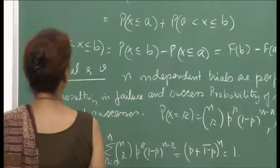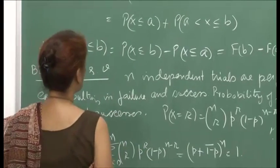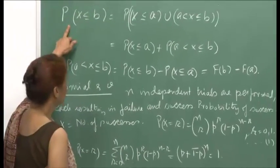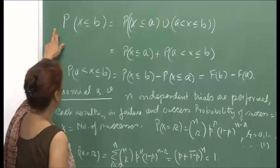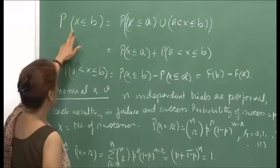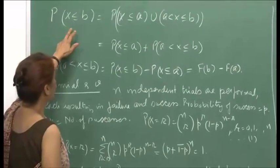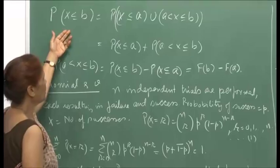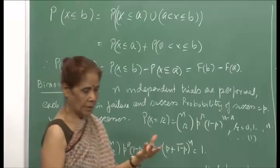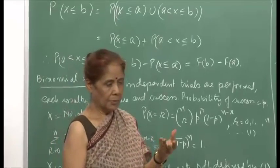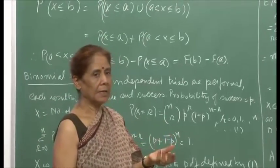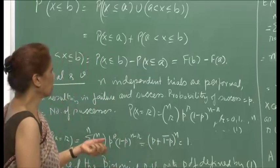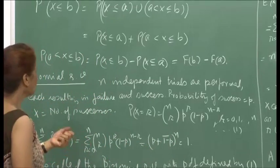Defining the distribution function, where we said that F(b) equals the probability that x is less than or equal to b. We can immediately write down the formula for the probability of x being in an interval using the distribution function.